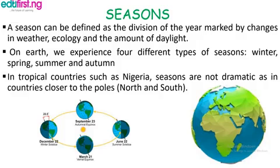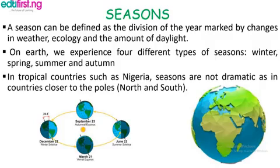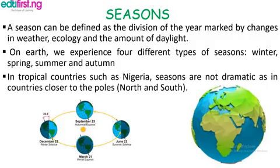Looking at the diagram, the greenish-yellow regions represent the equatorial belt. Countries in the northern hemisphere are in the upper green regions, while those in the darker southern part are in the southern hemisphere. These two regions — northern and southern hemispheres — are close to the poles and usually experience all four seasons in a year, while those near the equator experience mainly two seasons: dry and wet.